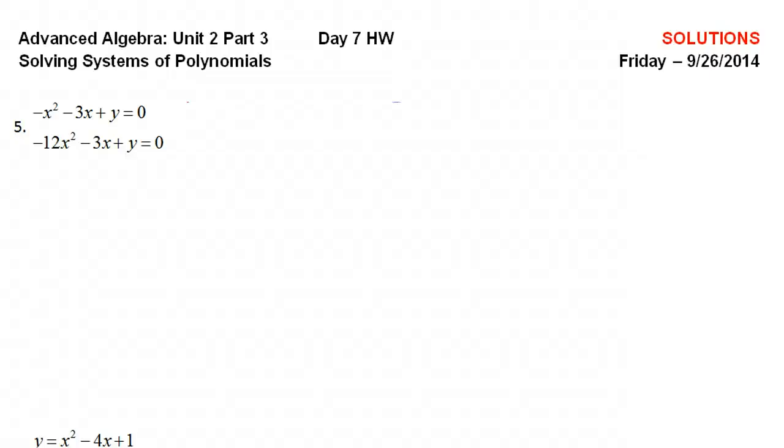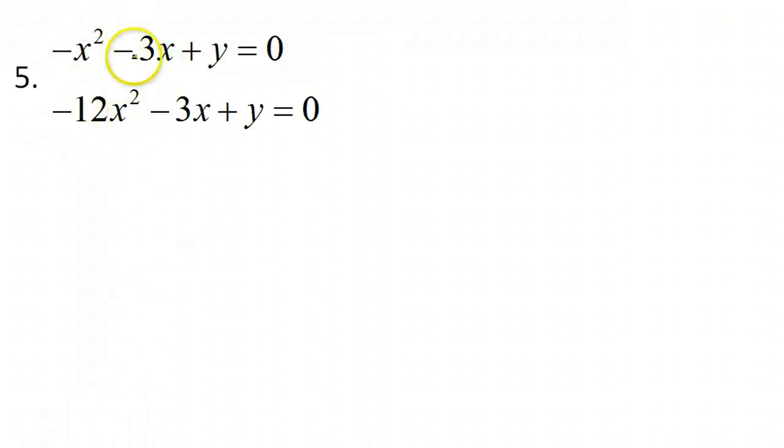All right, this is part three of our lesson on solving systems of polynomials. So first of all, what kinds of polynomials are these? Well, both of these are quadratic, so that means they are both parabolas.